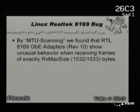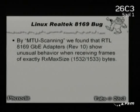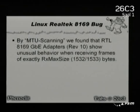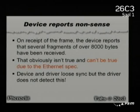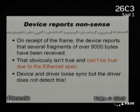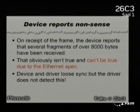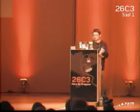So what we did was MTU scanning: we just send frames of all possible MTUs to the adapter and see whether something weird happens. We found out that when you send a frame of exactly RX MUX size bytes, the adapter shows some really fancy errors, as François put it. It will actually report that it has received multiple fragments of a frame, and each fragment is 8000 bytes in length. That can't be due to the Ethernet spec — you can only have 9000 bytes — so that's obviously some kind of bug.